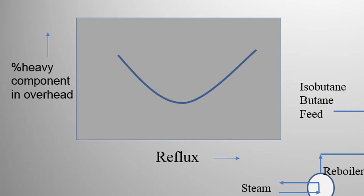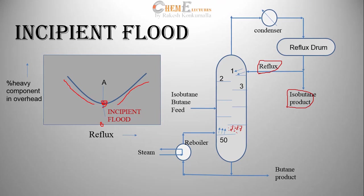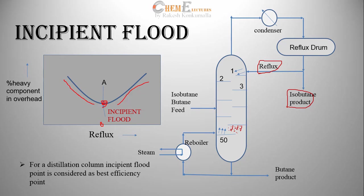This is shown in the graph of reflux rate versus heavy component in overhead. As the reflux rate is increased, the heavy component in the overhead decreases and then increases. Once it reaches point A, the increase is due to back mixing. Point A is called the incipient flood point, and the reflux rate at this point is called the optimum reflux rate. For a distillation column, the incipient flood point is considered the best efficiency point.